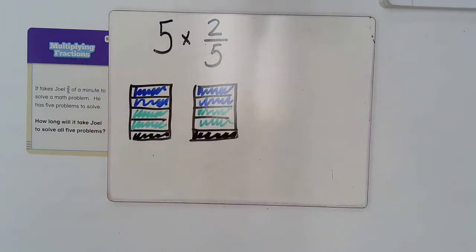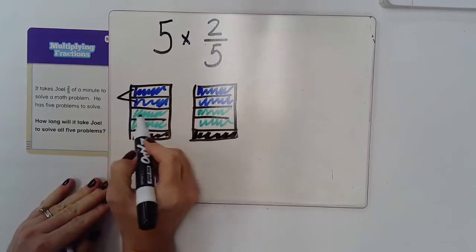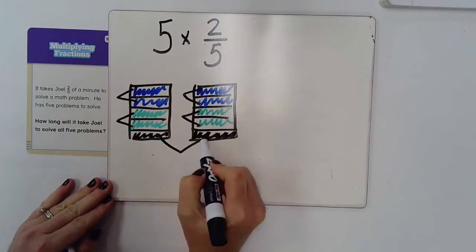When I look at this, I have one group, one group, another group, another group, and this group. So I have five groups of two-fifths.